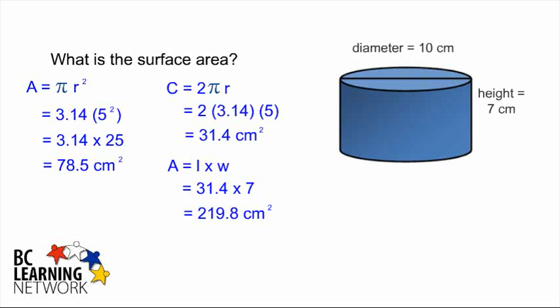We have the areas of the surfaces, which now need to be added together to find the total surface area. We found that the circle was 78.5 centimeters squared, and we need to add two of those together. The area of the rounded surface is 219.8. So we need to add that for a total of 376.8 centimeters squared.